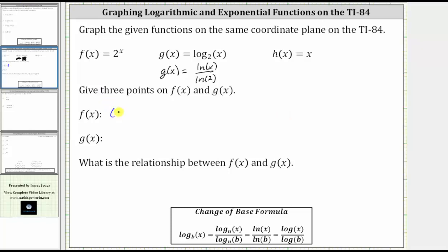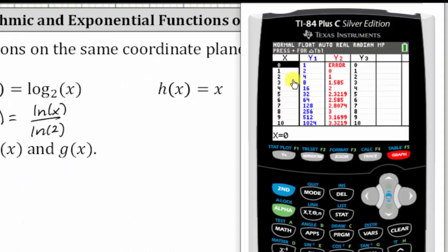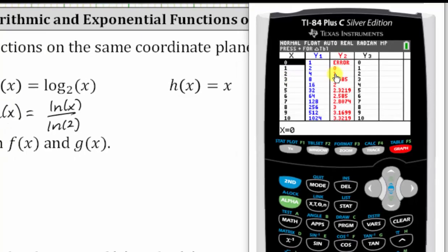f(x) contains the point (0, 1), g(x) contains the point (1, 0). Going back to the table, notice how f(x) contains the point (1, 2), and g(x) contains the point (2, 1).